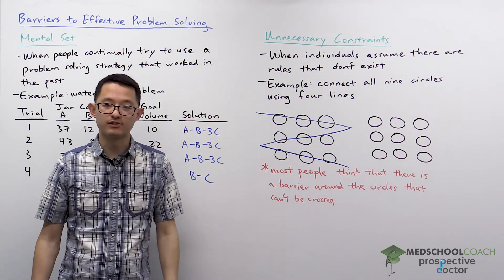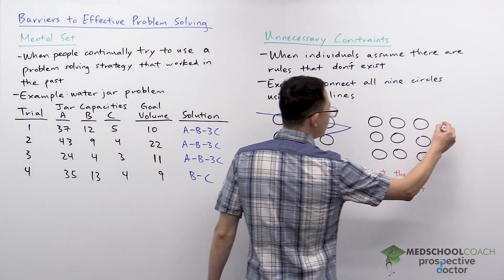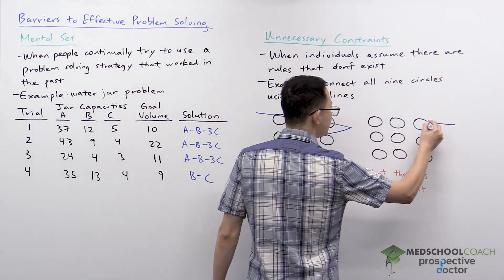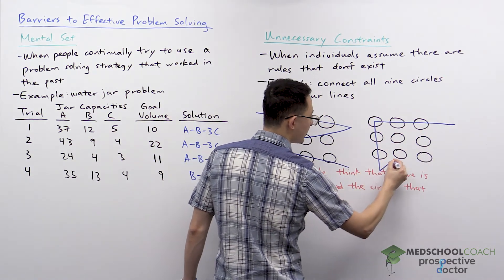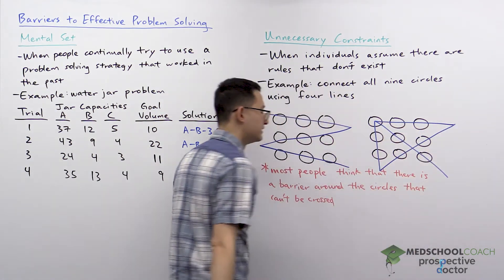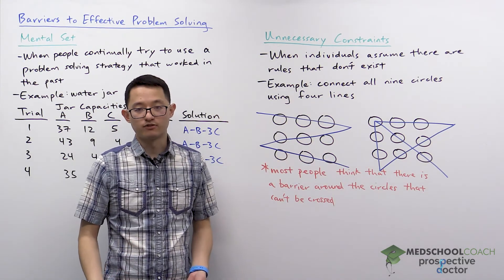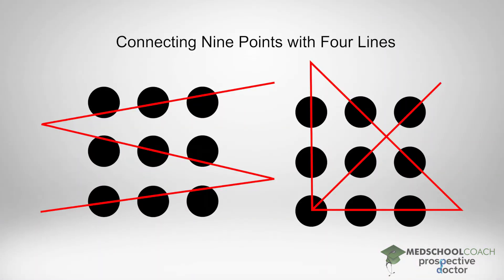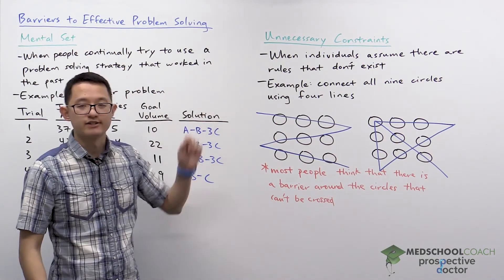There's another approach that you can take too. For example, you can draw one line like this, one line like this, one line like this, and then one line like this. So you can see how you've used four lines and you've connected all nine circles. For both of these solutions, you can't have used this unnecessary constraint that there is this border around the nine circles that you cannot cross. So this is how unnecessary constraint works.